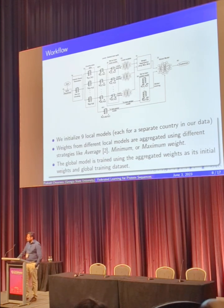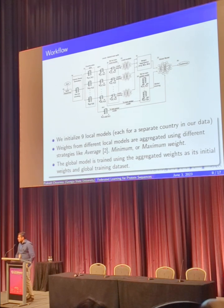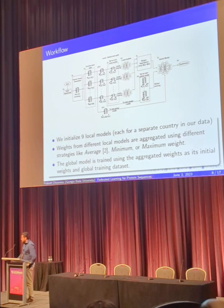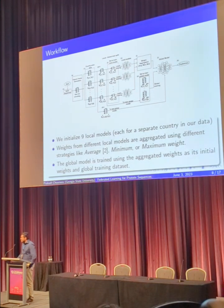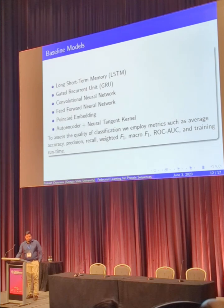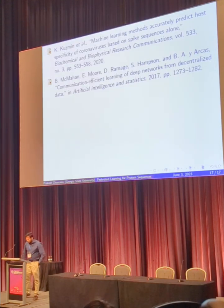A further question on federated learning: are the local models and the global model perfect copies of each other? Yes, we kept exactly the same model — it's all feed-forward neural networks. Is it possible in some other setting to have different models, and how would aggregation work? That's a next step we are looking forward to. With multimodal data the models would be different and we'd need a different strategy. This was just a prototype using 7k data, whereas the full dataset is around 10 million sequences. We are looking forward to working with multimodal datasets with different model types and aggregation. Yes, that is definitely possible. Thank you so much Prakash, really appreciate your talk.